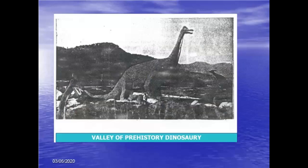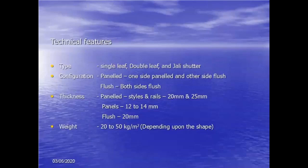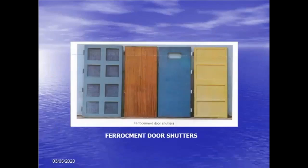Ferrocement door shutters are very popular, developed by the Central Building Research Institute (CBRI). Types include single leaf, double leaf, paneled doors, and flush doors with 12 to 14 mm thickness. Weight is roughly 20 to 50 kg per square meter — slightly heavier than wood depending on shape. No frame is required — these are called frameless doors. Ferrocement door shutters bring down the cost of the structure to a great extent.